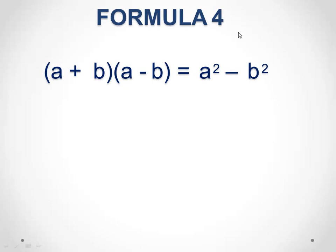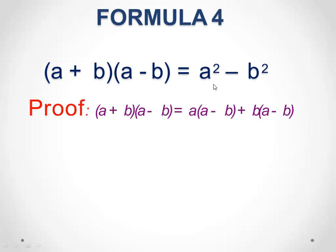The fourth formula is: a plus b multiplied by a minus b is equal to a square minus b square. To prove it, we are going to multiply these two brackets, beginning with the left hand side.